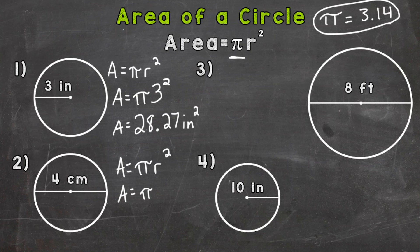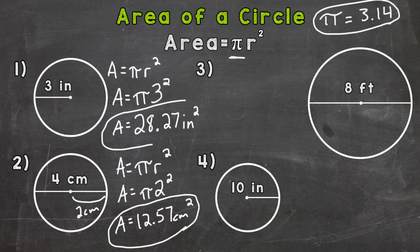Now this problem they give us the diameter so we only want half the diameter. We want the radius which would be 2 centimeters. So we plug in 2 for the radius and squared. Once we plug in and calculate we would get an answer of 12.57 centimeters squared. I forgot to circle my answer for number one so I'm going to go back and circle that.